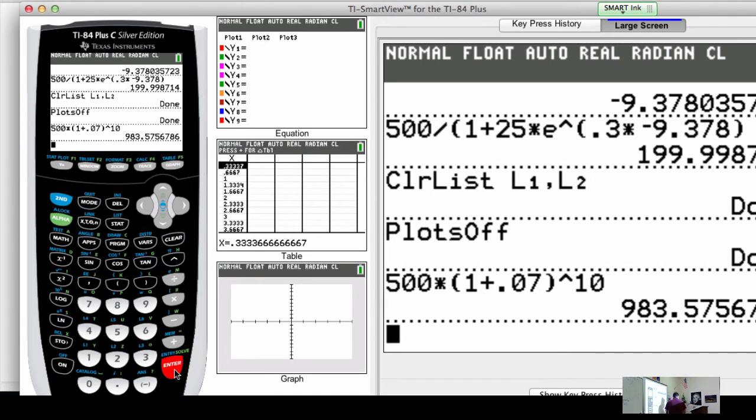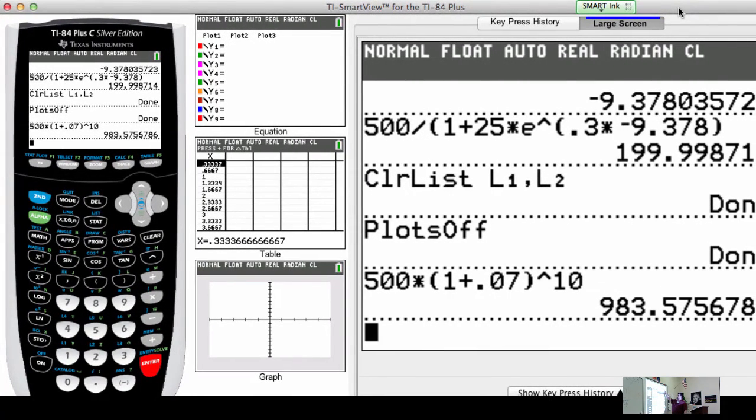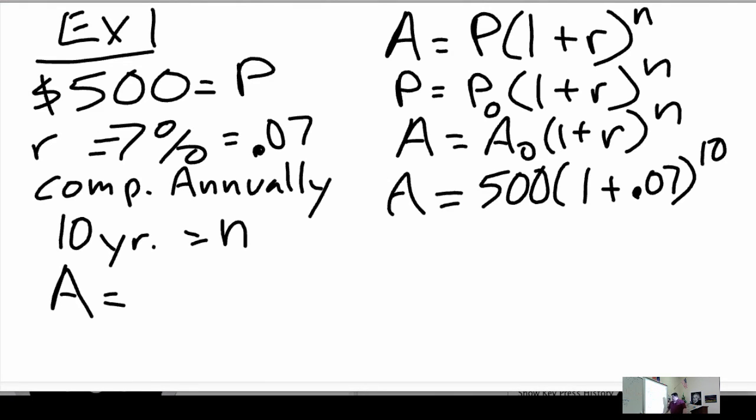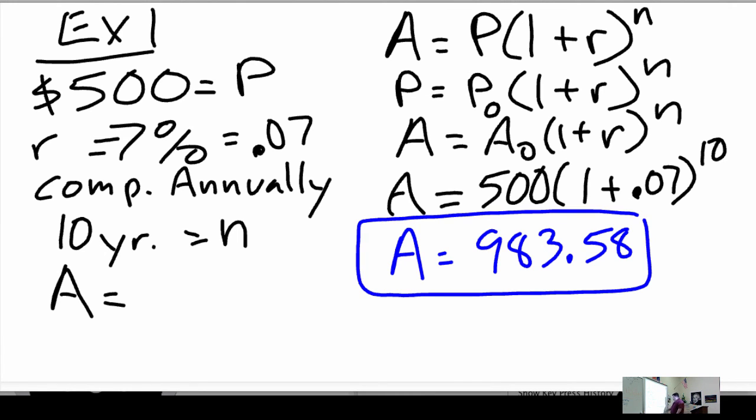Does that make sense to you guys? Okay. So, A then is 983, 58. That's it. That's all she wrote. Any questions?